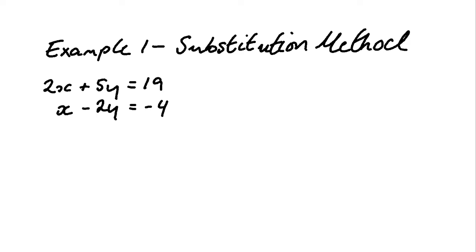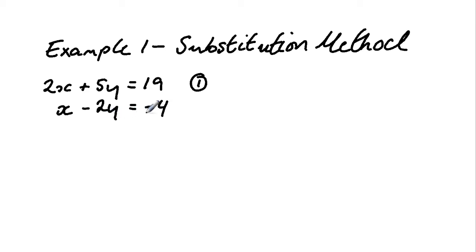For the first example, we're going to be using the substitution method. The first equation we have is 2x plus 5y equals 19 — that's equation number one. The second equation is x minus 2y equals minus 4 — that's equation number two.